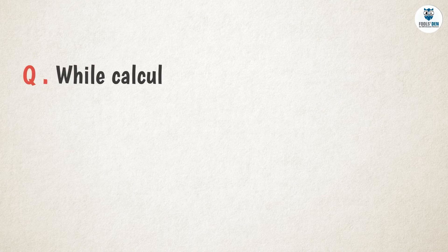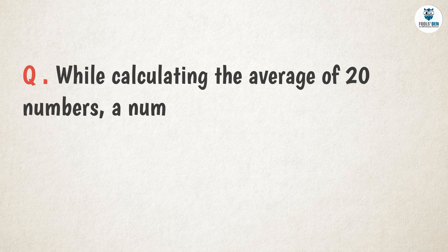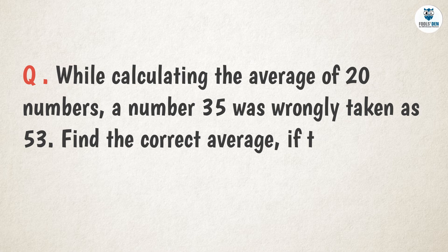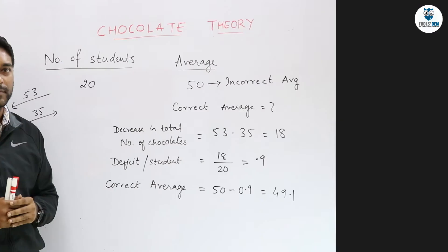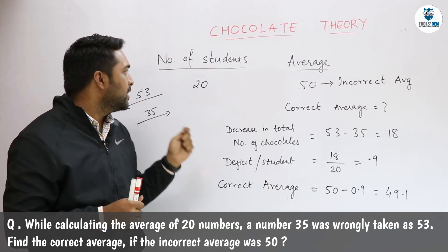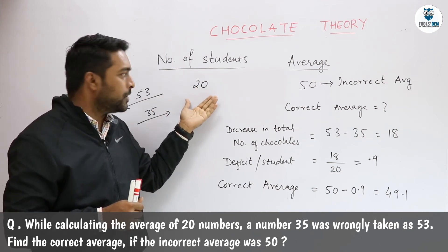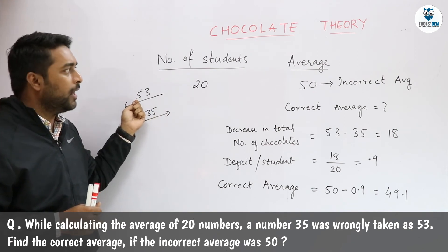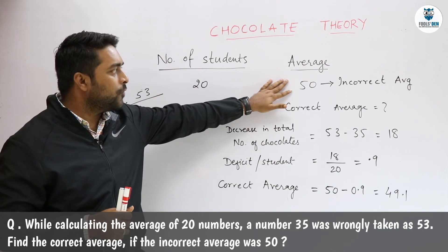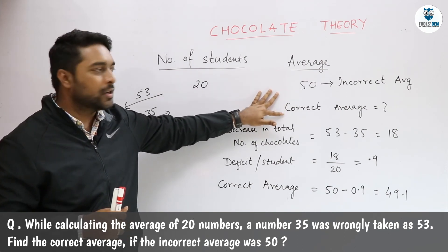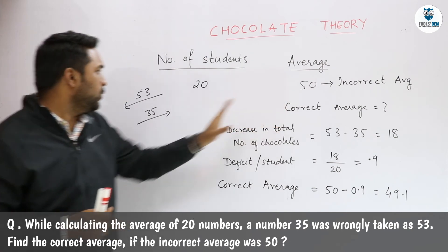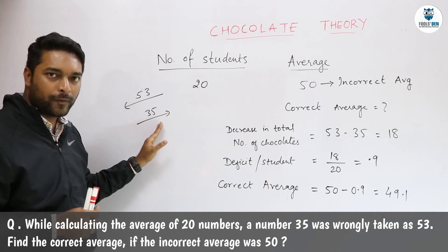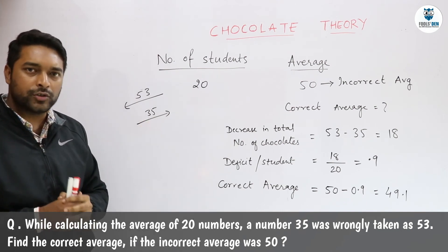The next question says: while calculating the average of 20 numbers, a number 35 was wrongly taken as 53. Find the correct average if the incorrect average was 50. To calculate the correct average, we exclude 53 and include 35 in its place. Let us solve this using chocolate theory.